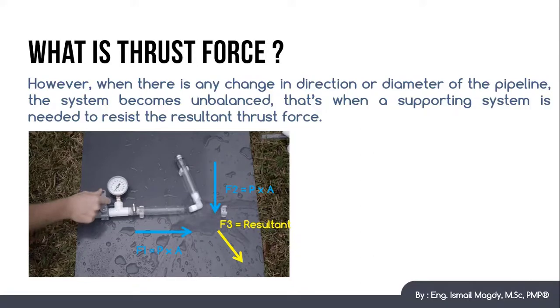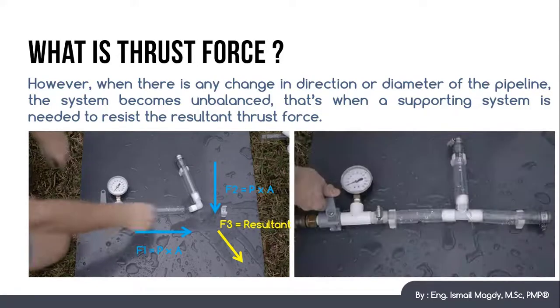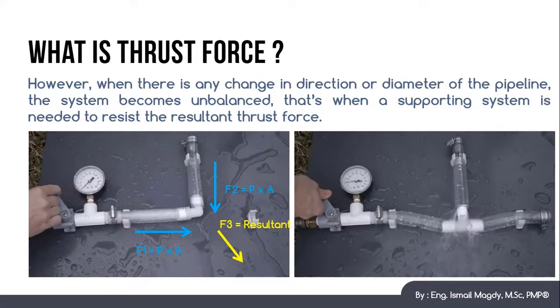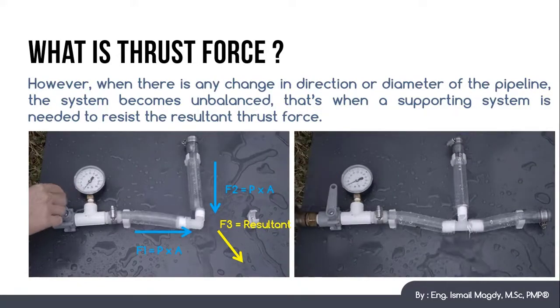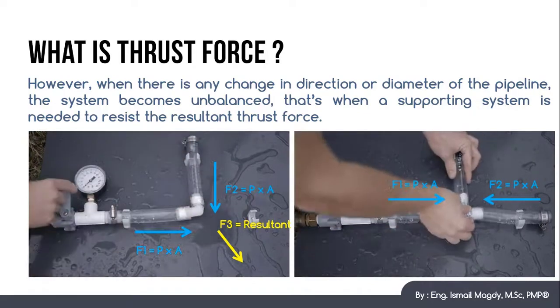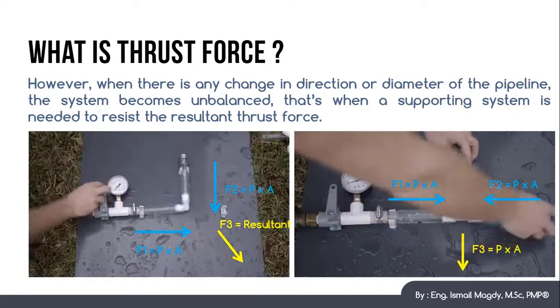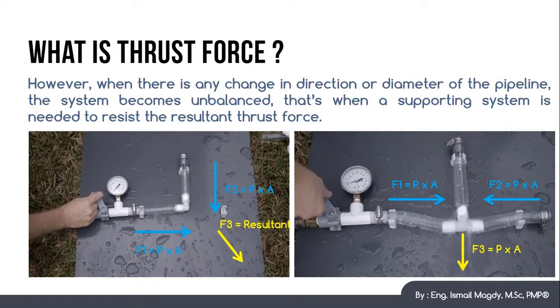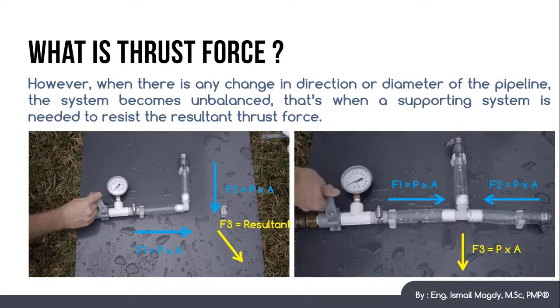The same thing happens if we added a T connection like we can see here. F1 and F2 are cancelling each other. However, F3 is not, so the system will get detached also once we start pressurizing it.